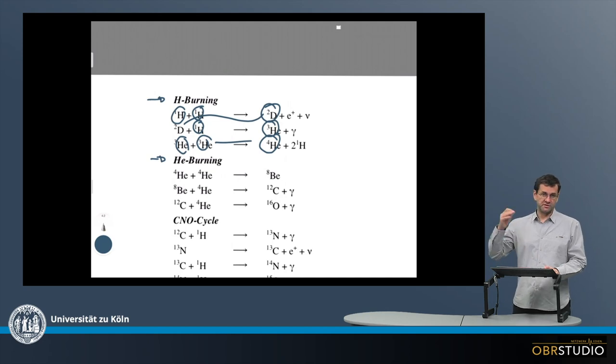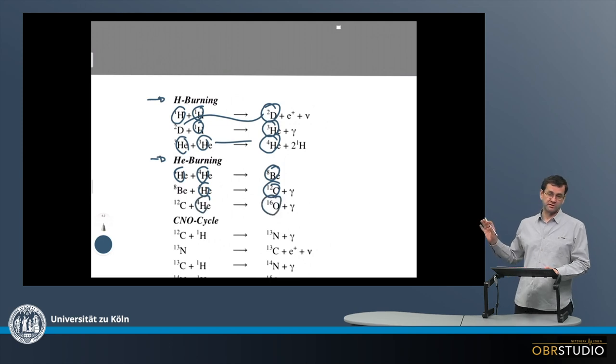What's happening in helium burning is that helium, for example, forms beryllium, which is then used together with helium to form carbon-12. And this is then used together with helium to form oxygen.